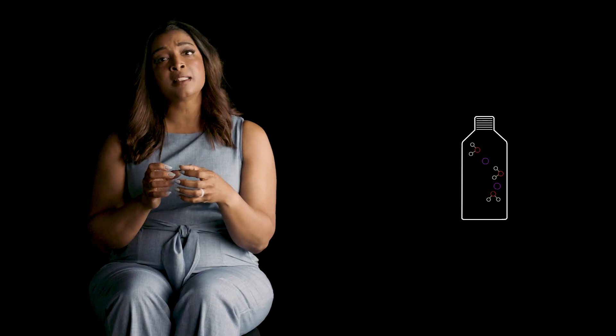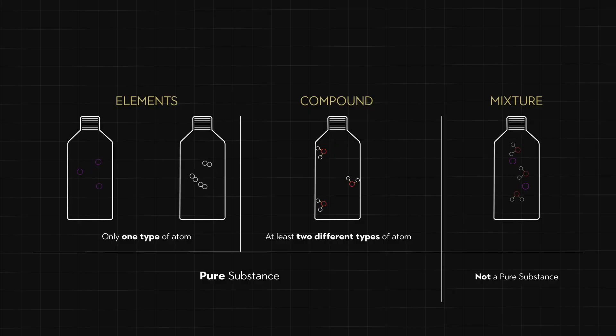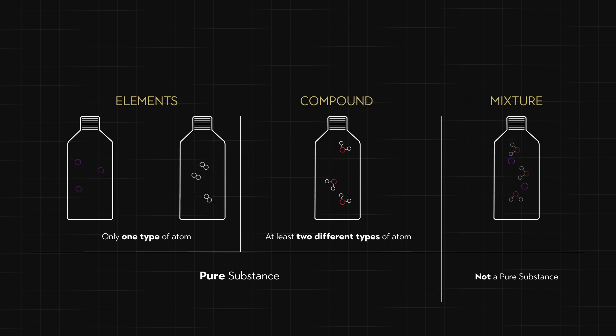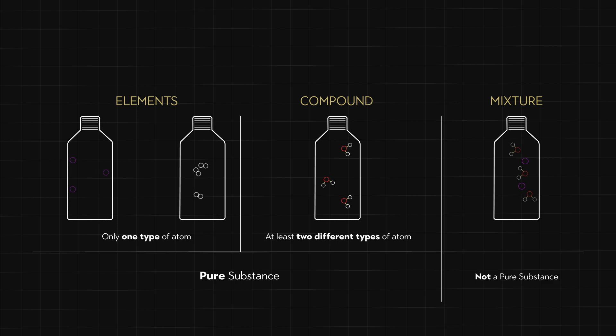Finally, when different substances are physically combined without forming new chemical bonds, a mixture is formed. Unlike elements and compounds, mixtures retain the individual properties of their components and it is not a pure substance anymore.